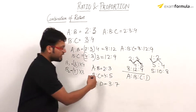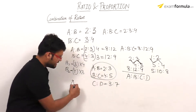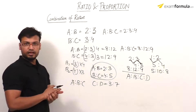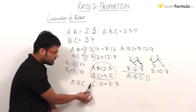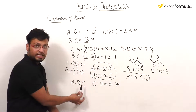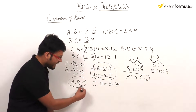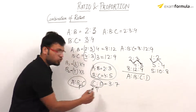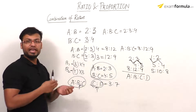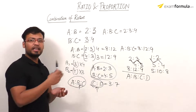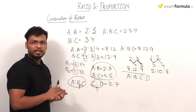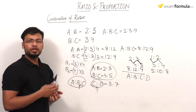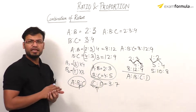After finding A ratio B ratio C using the first two equations, I then look for C common in both the resulting ratio and the third equation. I equate the value of C to its LCM so that I can finally get the required combination A ratio B ratio C ratio D. This is a linear step-by-step method.